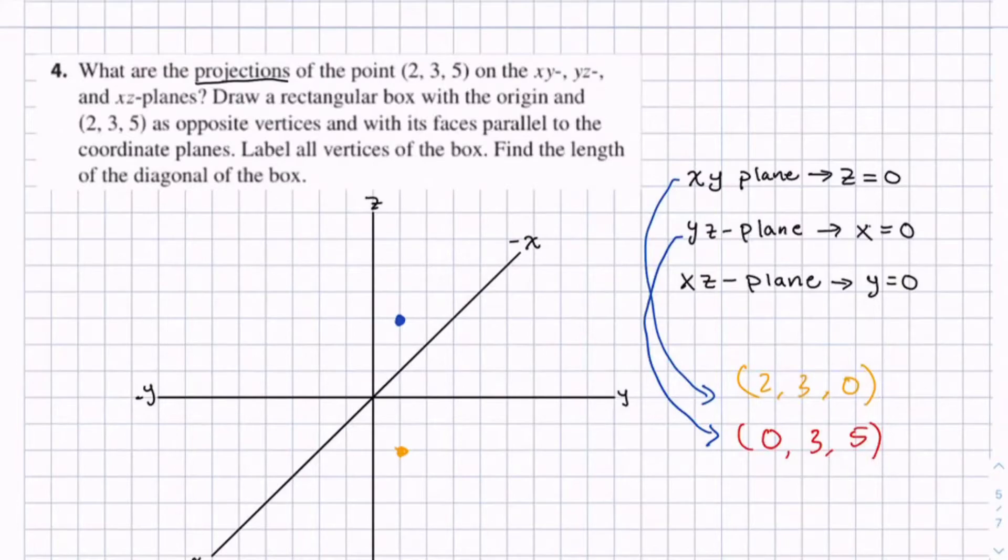And we can kind of visualize this. This is a bit harder. Let's say our light source was kind of like here, perpendicular to the yz plane. Well you can't really draw it because it would be like out of this paper. I'll try to draw it for the xz plane.